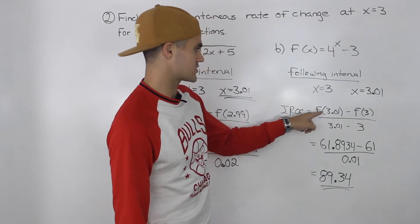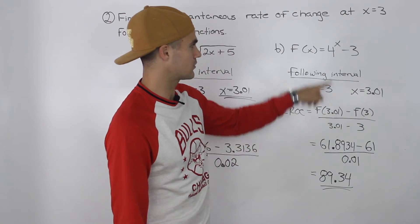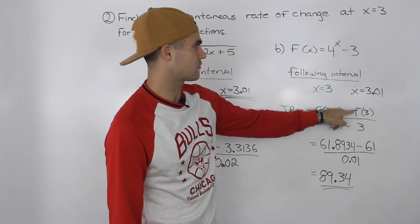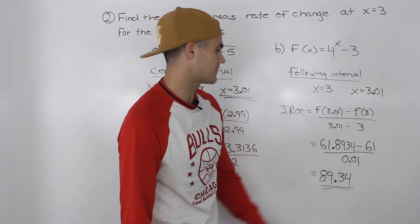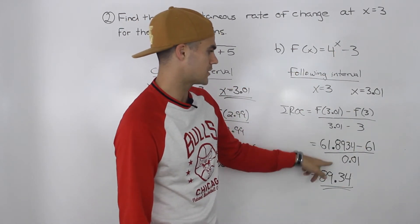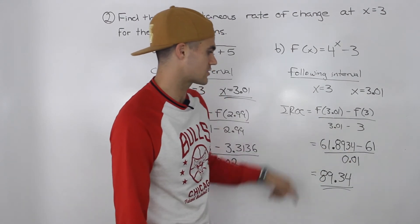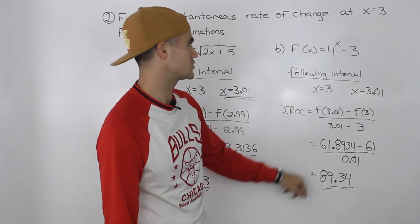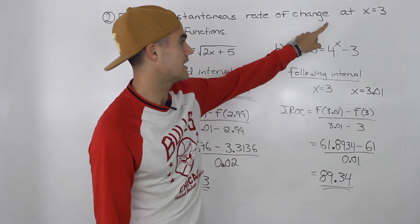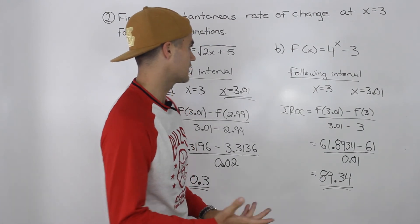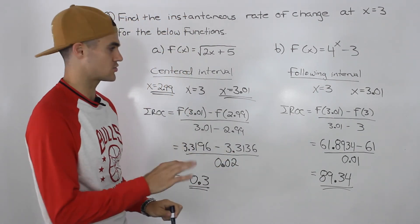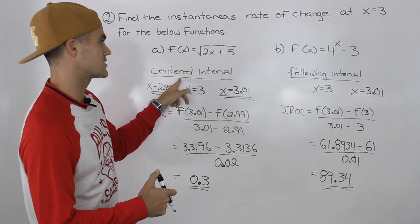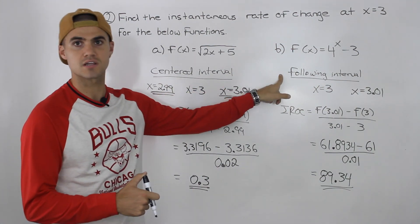When you further simplify this: f(3.01), plugging in 3.01 for x, you get 61.8934. f(3), plugging in 3, you get 61. The denominator simplifies to 0.01. Simplifying this in your calculator, you end up getting 89.34. So that is the instantaneous rate of change for this function at an x value of 3. We found the approximate instantaneous rate of change for both functions using different methods — the centered interval for the first and the following interval for the second.